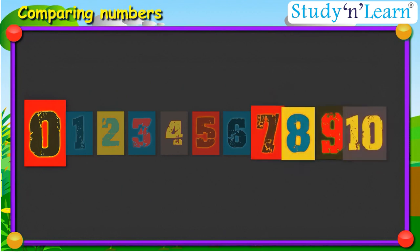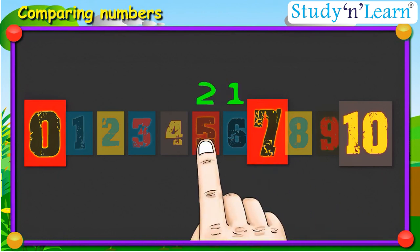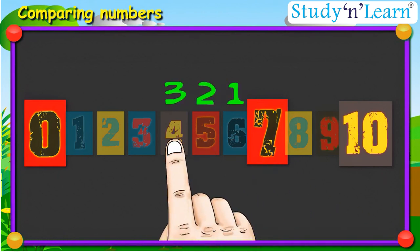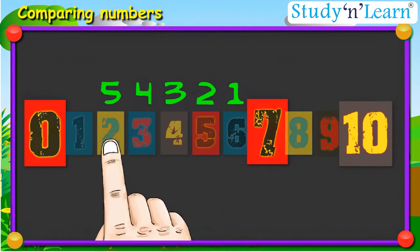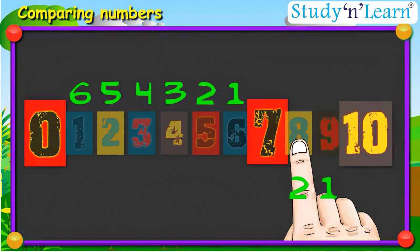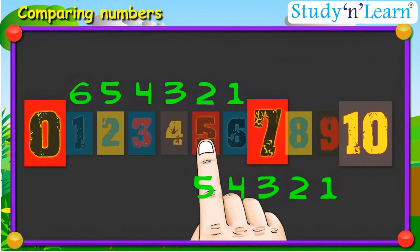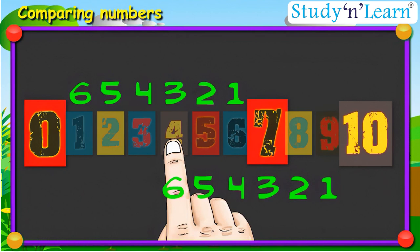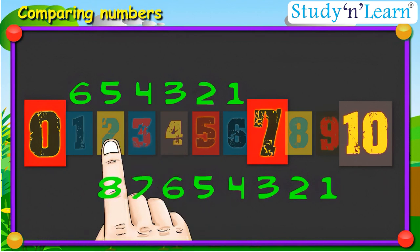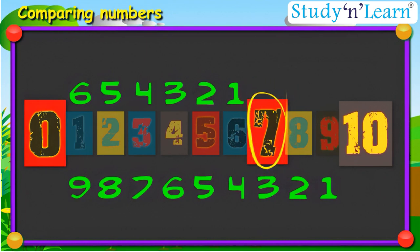Similarly, in the case of 10 and 7, 7 is closer to zero as we count six steps backwards to reach zero. As compared to 10, where we have to take nine steps. Hence, 7 is smaller than 10.